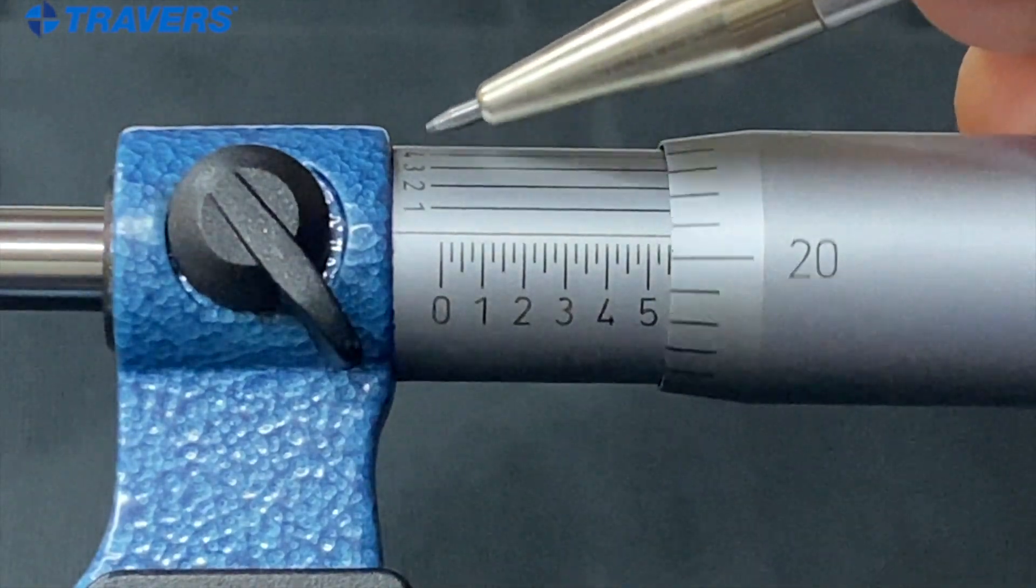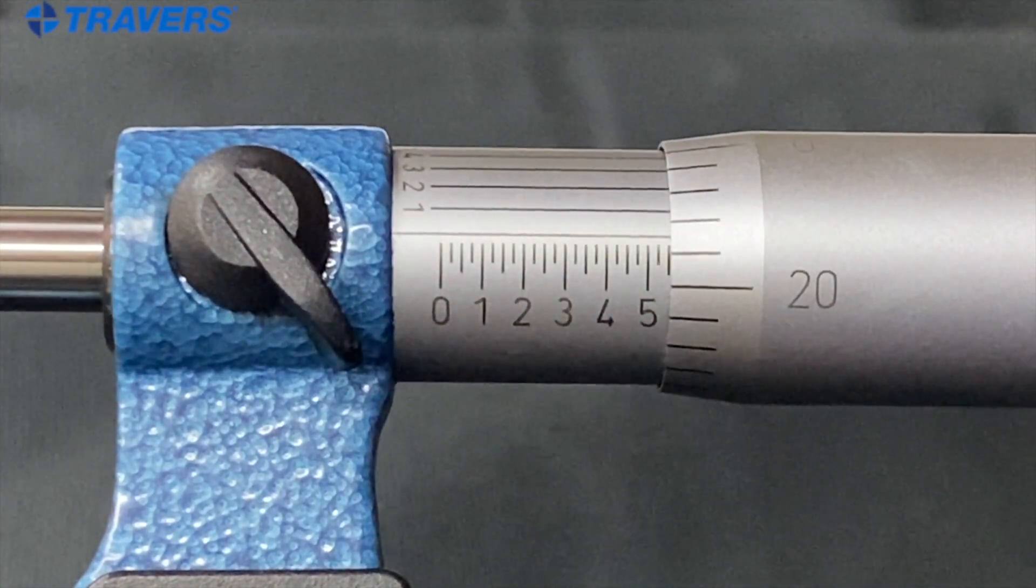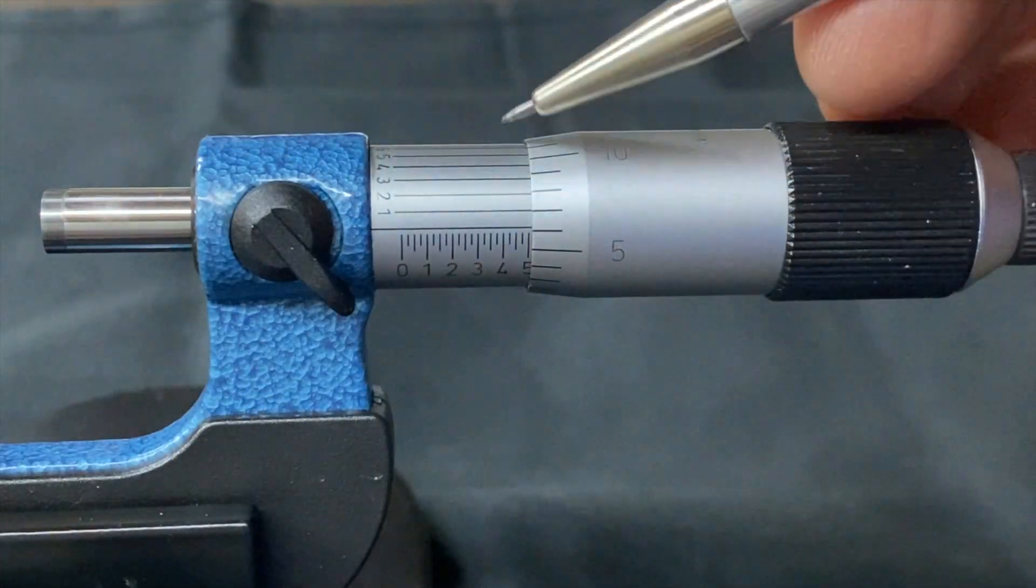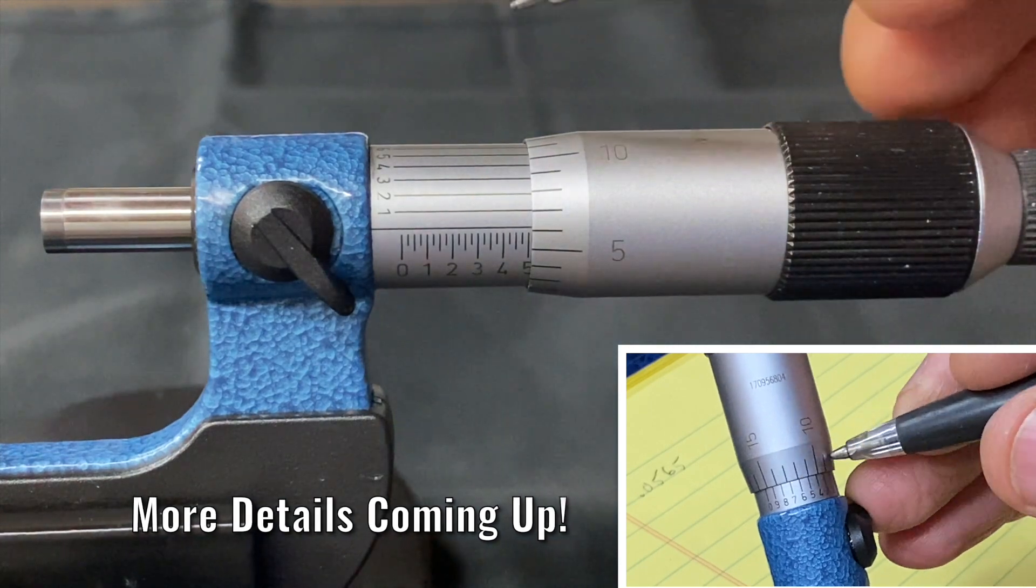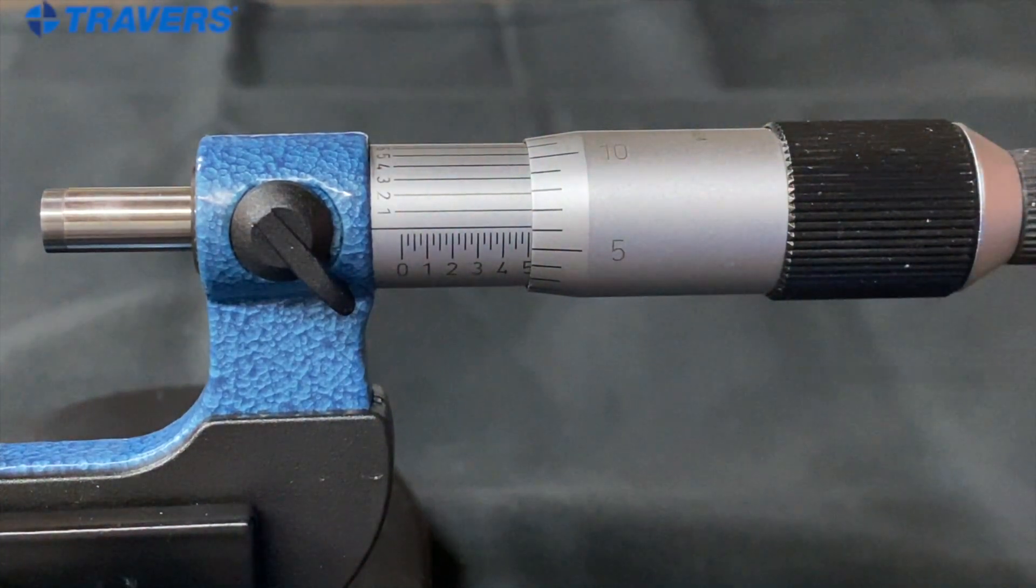So far everything we've done is only three places past the decimal. What this does, these lines and numbers, is get you four places past the decimal. So now to explain what these lines are that go around the back. There's ten lines. They go from one to nine and then the tenth one is actually a zero.